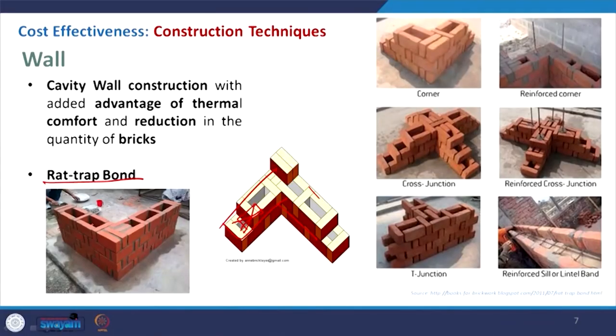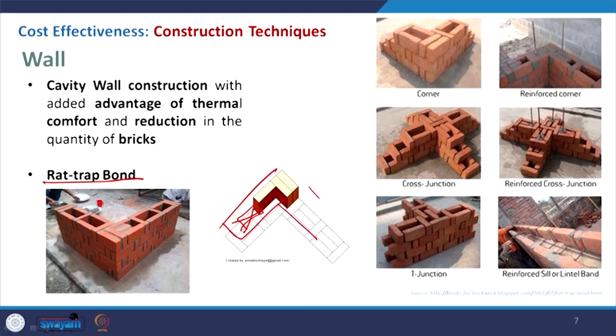The constraint with this is that when you design, you have to design with the unit size. All doors, windows, and openings should be designed accordingly so there are no cuts. In order to give strength to this wall — which is useful for one, two, and even three story buildings — some kind of reinforcement can be added.